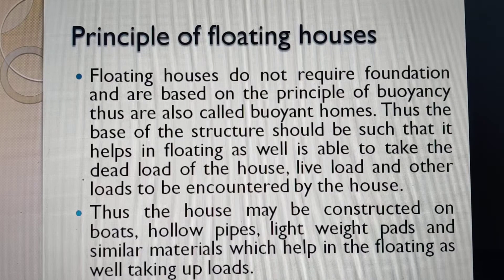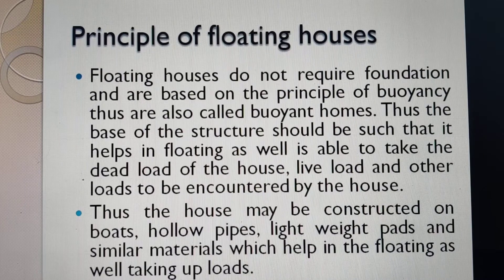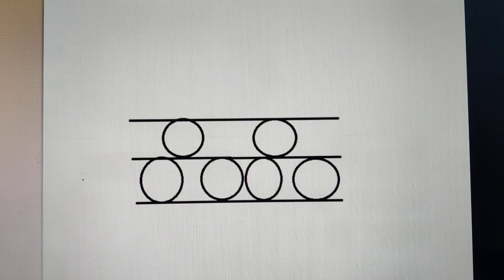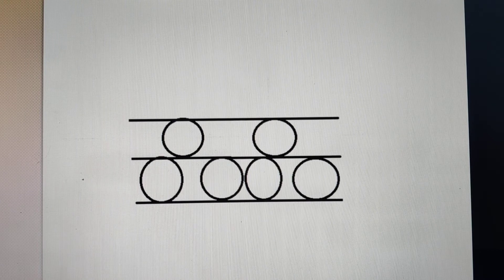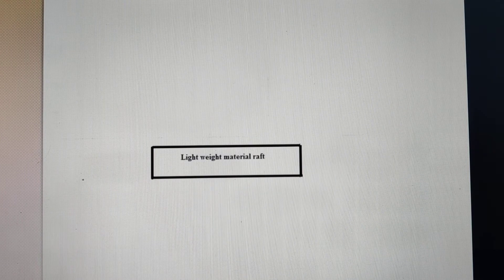The house may be constructed on boards, hollow pipes, lightweight pads, and similar other materials which help in floating as well as taking up the loads. These pipes may be of different materials — RCC, steel, fiber reinforced, or any other similar materials. Lightweight material pads can also be used on which the houses may be constructed.